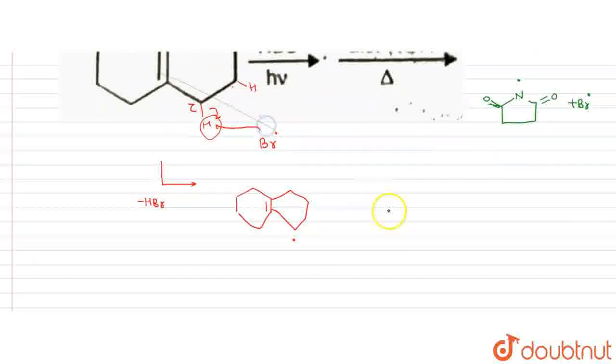I will show the resonating structures. Resonance is occurring - the bond will move here. This is the resonating structure. Resonance stabilizes the free radical. How will the reaction proceed?